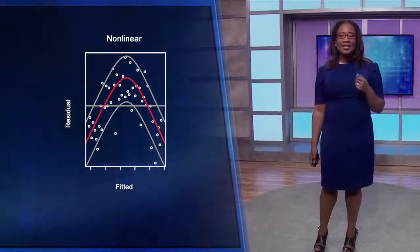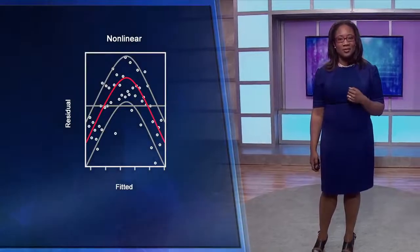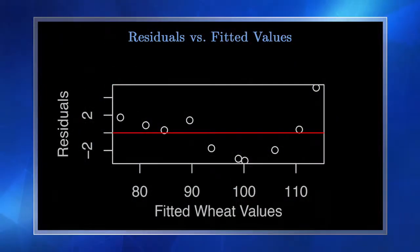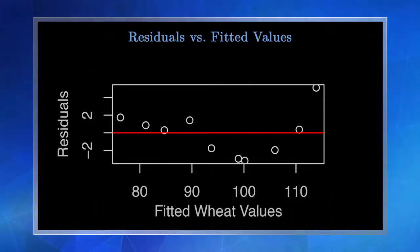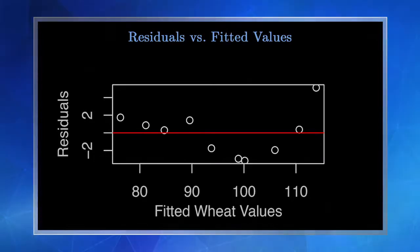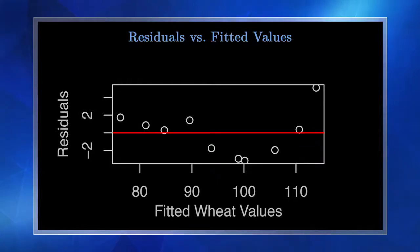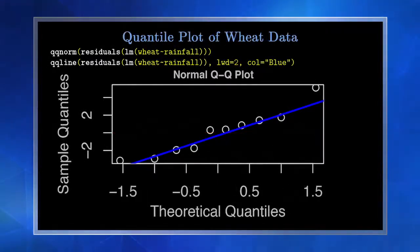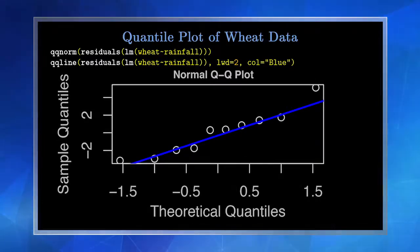Here's a residual plot of our wheat data. There appears to be a pattern, but remember we have so few data points — this probably isn't the best way to determine normality. We can always go to the QQ plot. Our QQ plot confirms that our data, even though it's small, is satisfying the normality assumption.